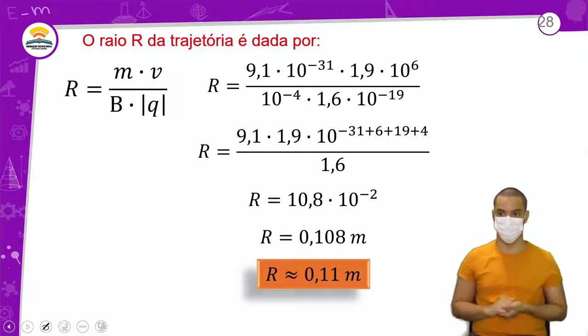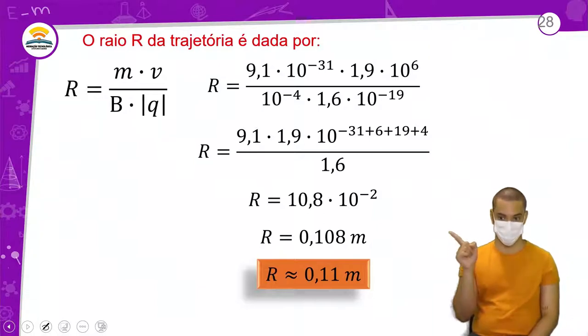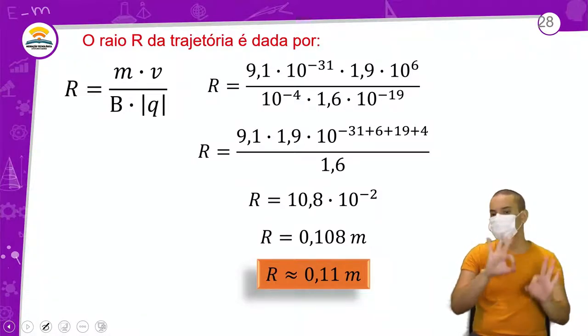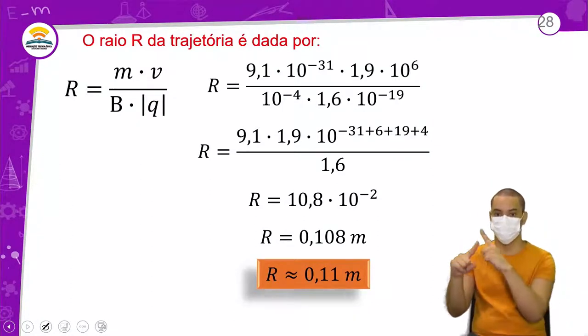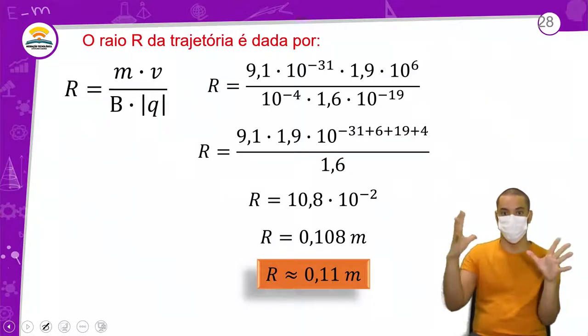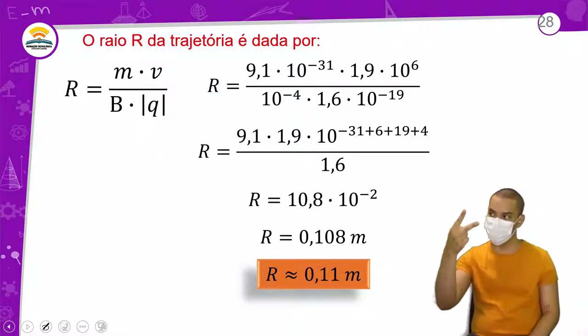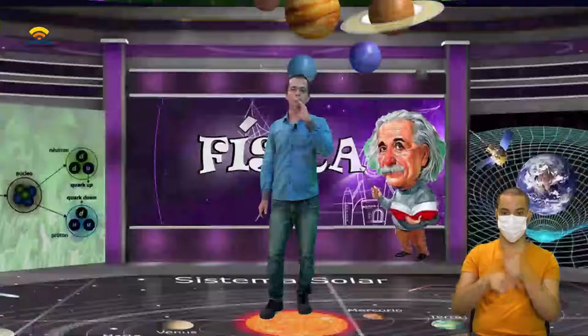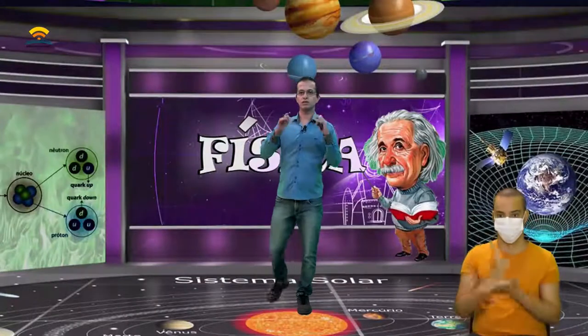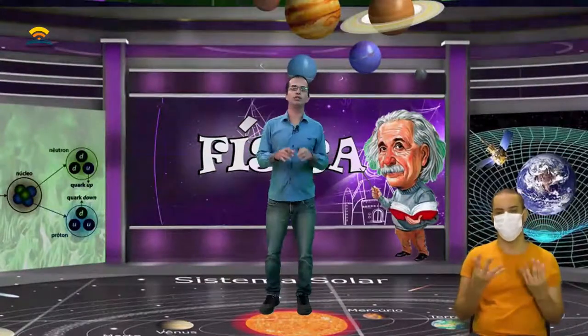Toda vez que for fazer essas contas, vai ter muita conta e muita potência de 10 — é o que vai dificultar um pouco. O resto é a regra da mão direita. Use a multiplicação dos números, repete a base e soma os expoentes na multiplicação, e repete a base e subtrai os expoentes na divisão. Acha a potência e depois coloca em notação científica. Já já a aula continua.